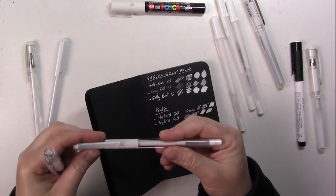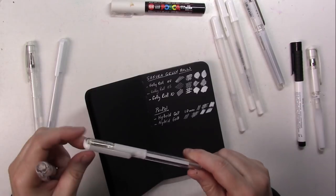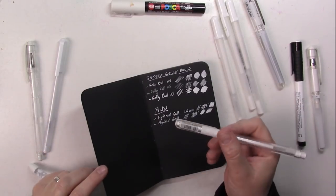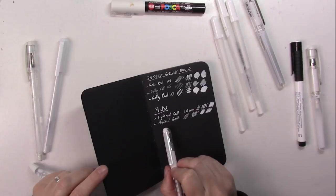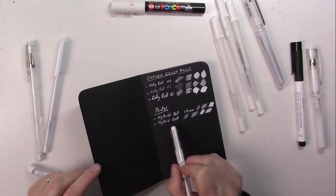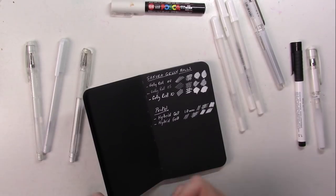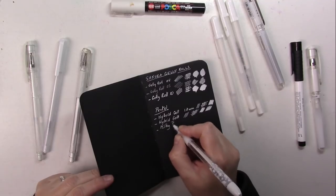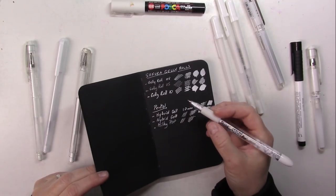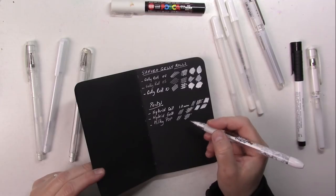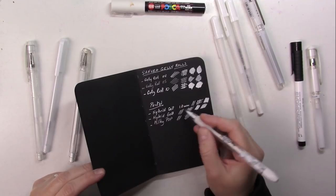This one is really nice because the flow is really nice, but because the tip is smaller you can see that there's less ink coming out so it's not as bright. This one, the flow is nice too but it's a little scratchier than the Hybrid Gel.